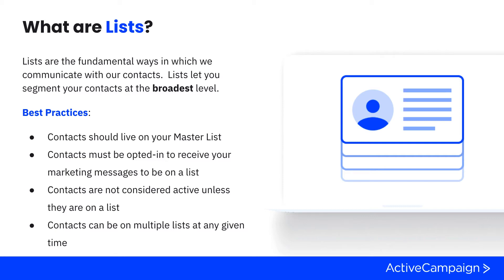Last but not least, contacts can be on multiple lists — they don't need to be grouped into just one. There are a lot of people in Boone's Bandanas who are customers but are also interested in our community, which are two of our lists. There are people interested in our newsletter and our animal shelter side of the business. It's important to think about how people might go back and forth from one list to another.